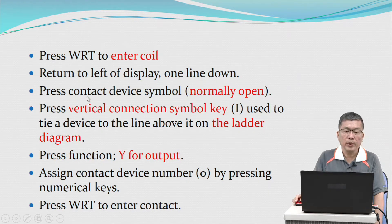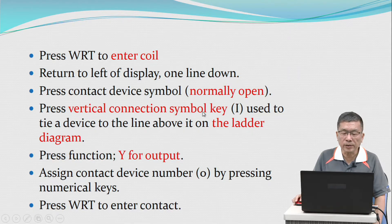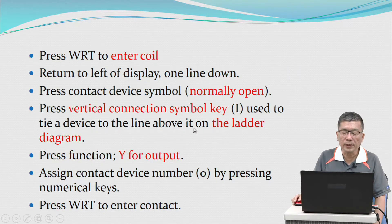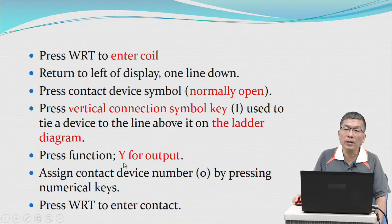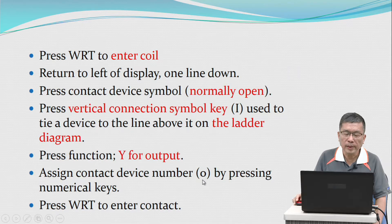Press contact device symbol, normally open. Press the vertical connection symbol — the insert pointer key — to tie devices to the line above on the ladder diagram. Press function Y for output. Assign contact device number 0 by pressing the numerical keys. Press right to enter contact and connect.